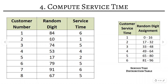The second customer will require 1 minute of service. For the third customer, random digit 74 belongs to the 65–80 range — service time 5. For the fourth, 53 is in the 49–64 range — service time 4. For the fifth, 17 is in the 17–32 range — service time 2. For the sixth, 79 is in the 65–80 range — service time 5. For the seventh, 91 is in the 81–96 range — service time 6. For the eighth, 67 is in the 65–80 range — service time 5.